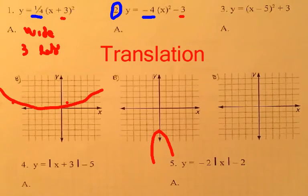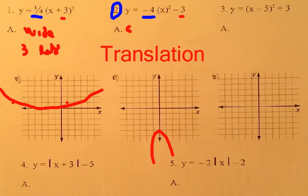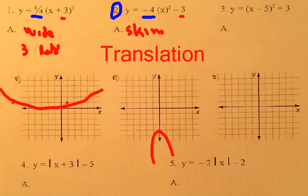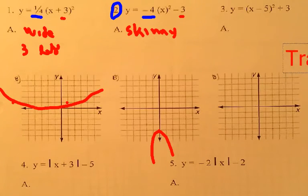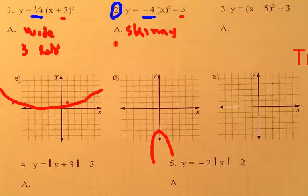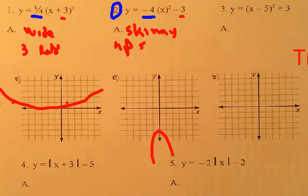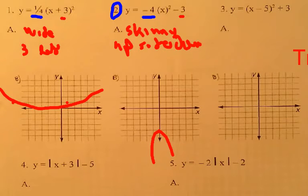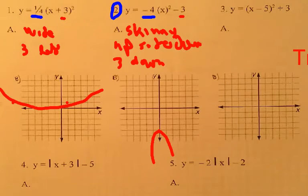What about this one? So, this is skinny. Let's move this out of the way. I can drag this over here like that, and then come back to this. This is upside down as well, and it's also down three. Three down. There you go.